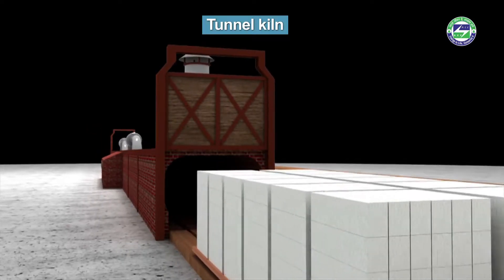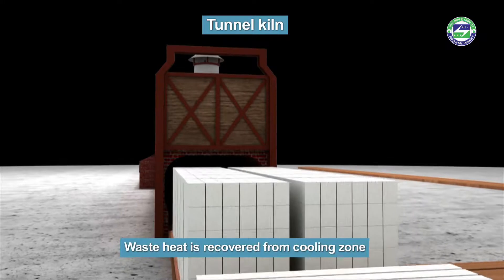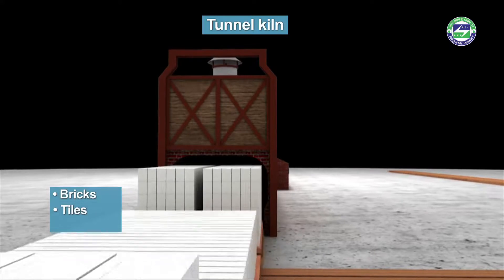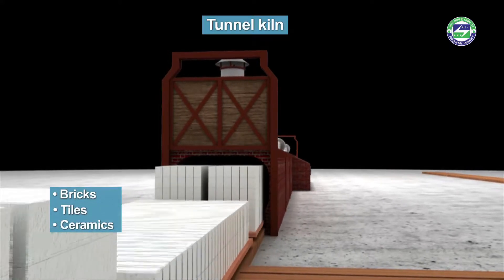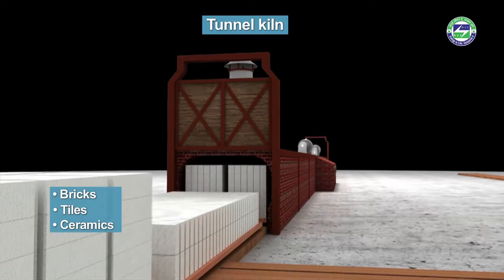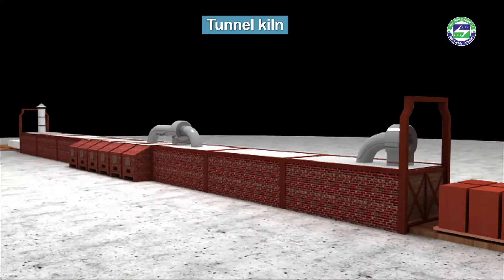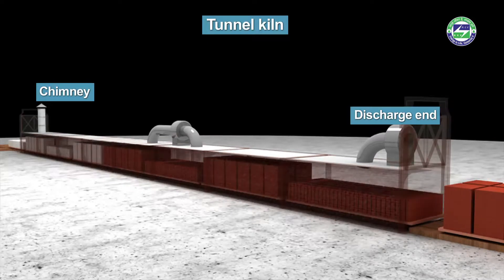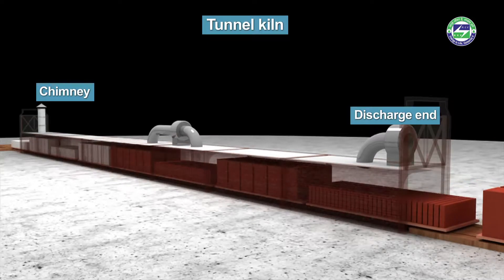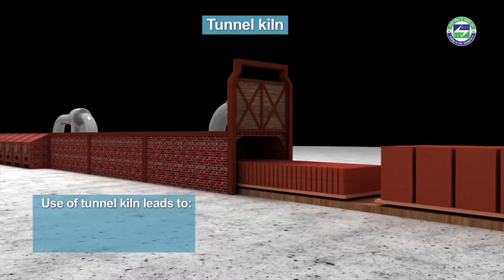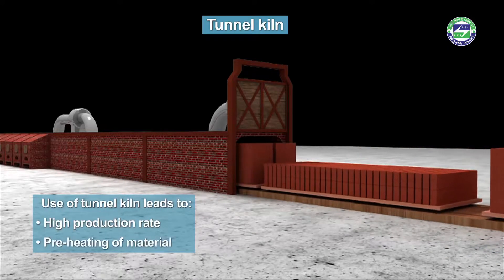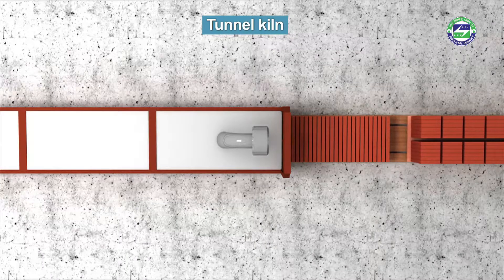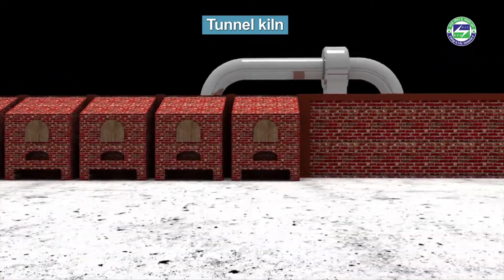In order to optimize fuel consumption in the kiln, waste heat is recovered from the cooling zone. Materials like bricks, tiles and ceramics are common products that may be mass produced with the aid of a tunnel kiln. The cooling air is blown through the discharge end and passes through the entire kiln before being let out through the chimney. Use of the tunnel kiln leads to high production rate, pre-heating of material, and efficient and economical cooling compared to other conventional kilns like down draft kilns.